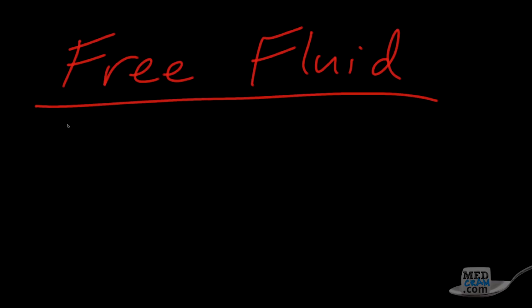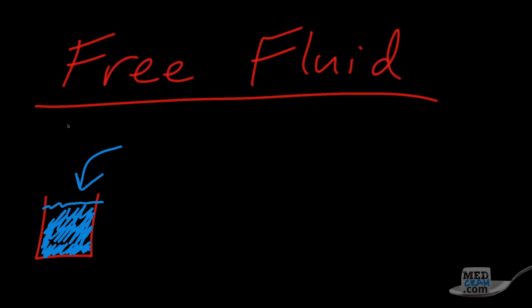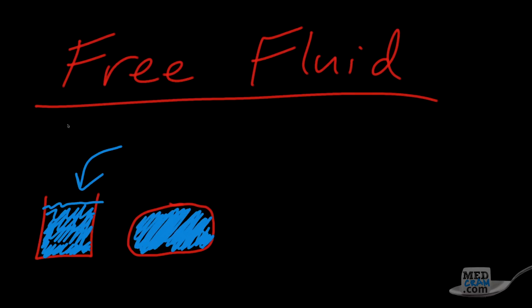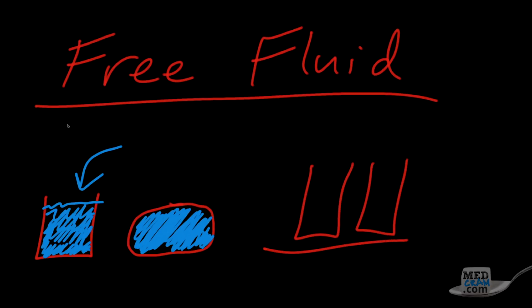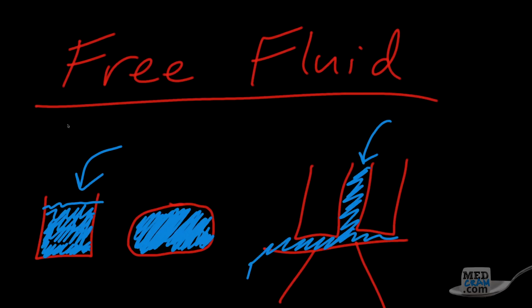Just because you see fluid on ultrasound doesn't mean it's pathologic. The concept is pretty simple: if I have a cup and pour water into it, the fluid takes the shape of the container. Similarly in the body, a fluid-filled bladder takes the shape of the bladder — a generally geometric shape with smooth borders within the walls of that container. Free fluid is different: if fluid is poured between two cups, it goes down to the most dependent areas and its shape is outlined by the cups.